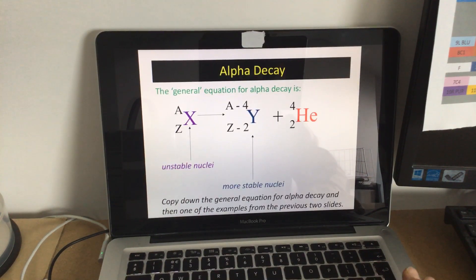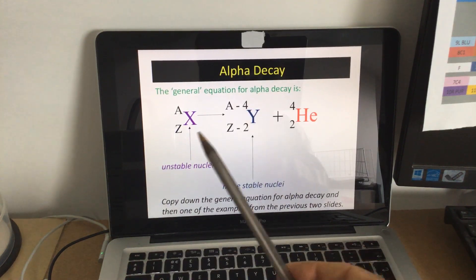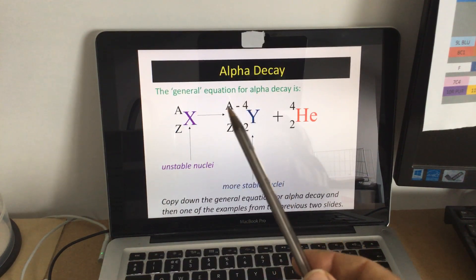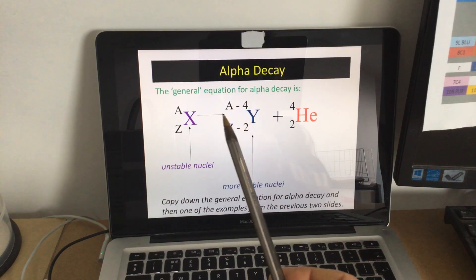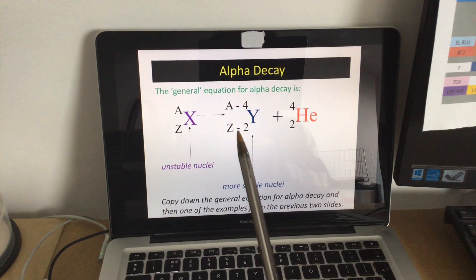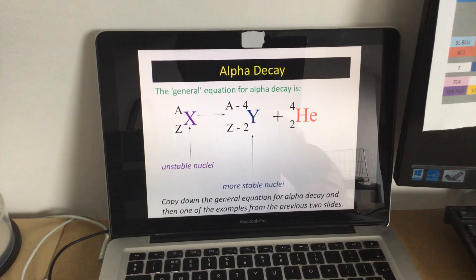Beta now, that's just a way of writing alpha decay, because if we see here A, the number A goes down by 4, and the number Z goes down by 2. That's all A and Z, they're just random letters they've used to denote those.